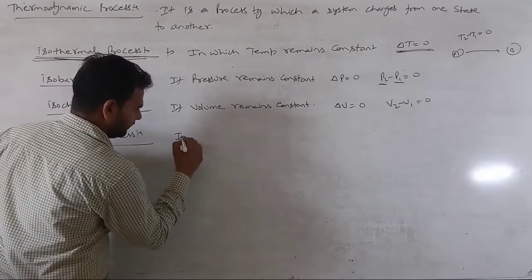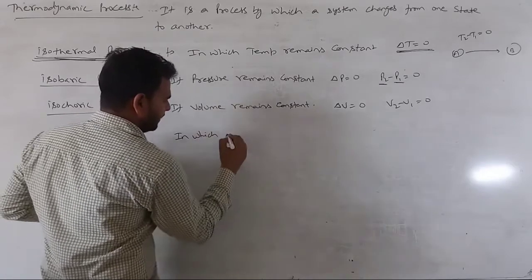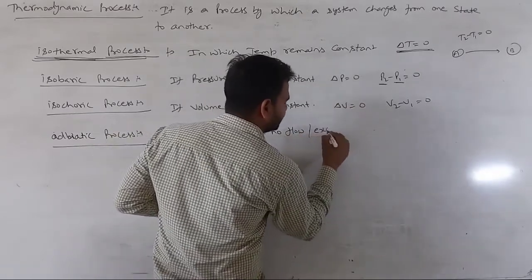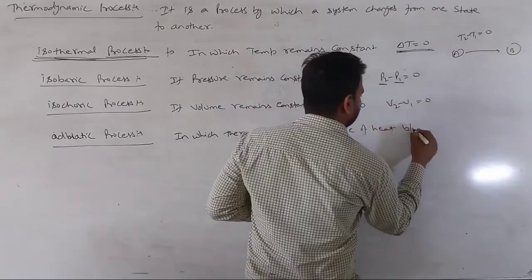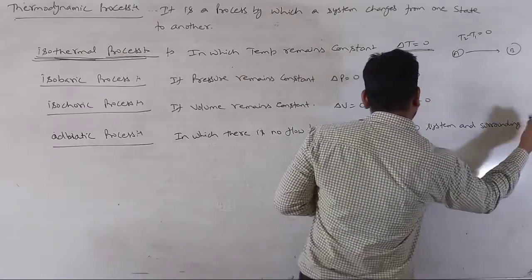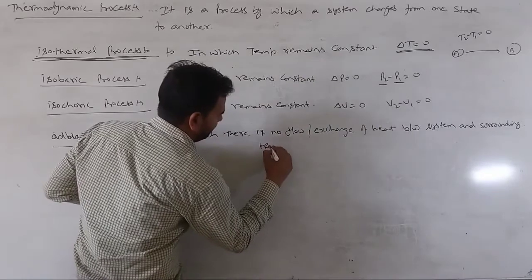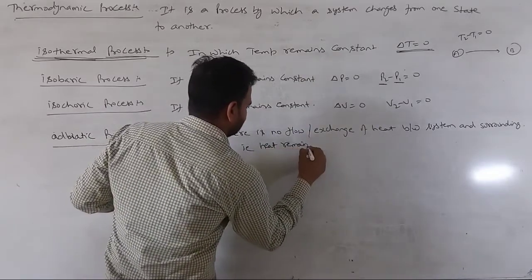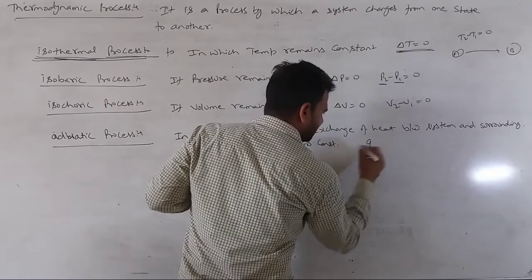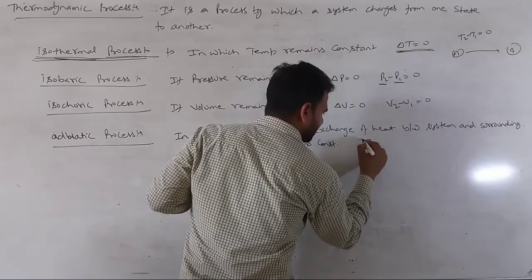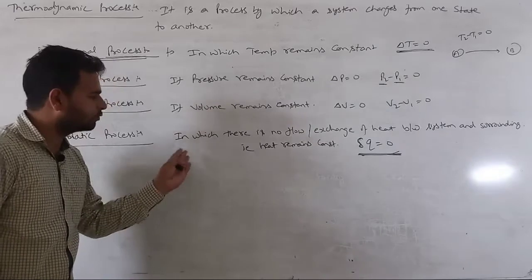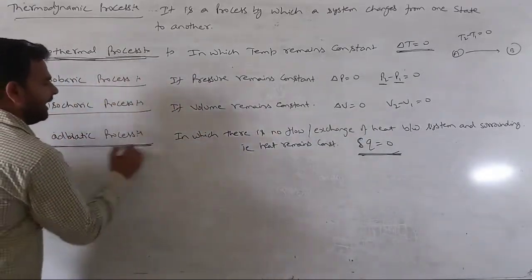The last type is the adiabatic process. It is the process in which there is no flow or exchange of heat between the system and its surroundings. Heat remains constant, meaning ΔQ equals zero — the system neither absorbs nor releases heat. We call this an adiabatic process.